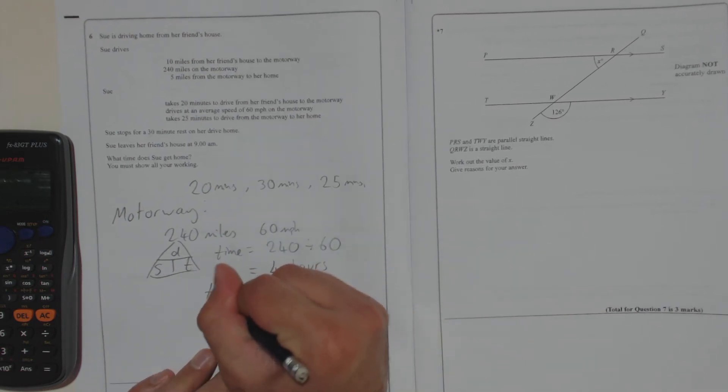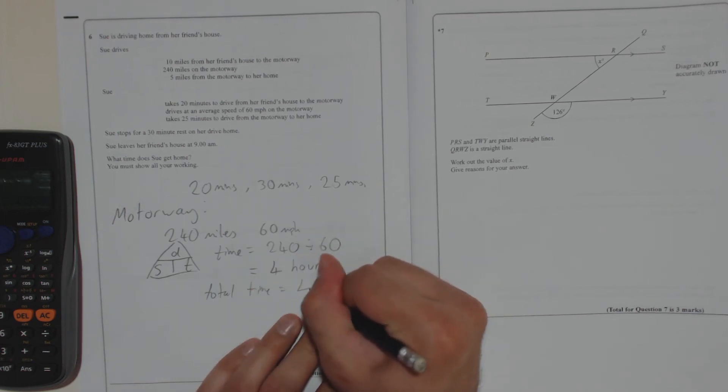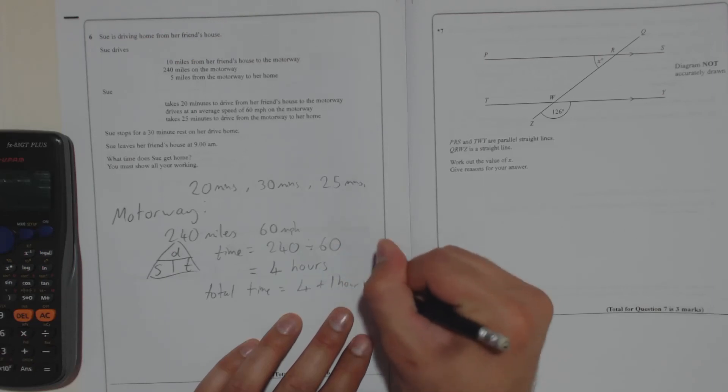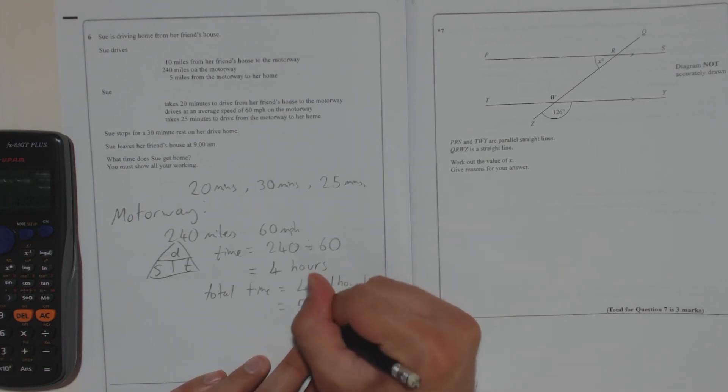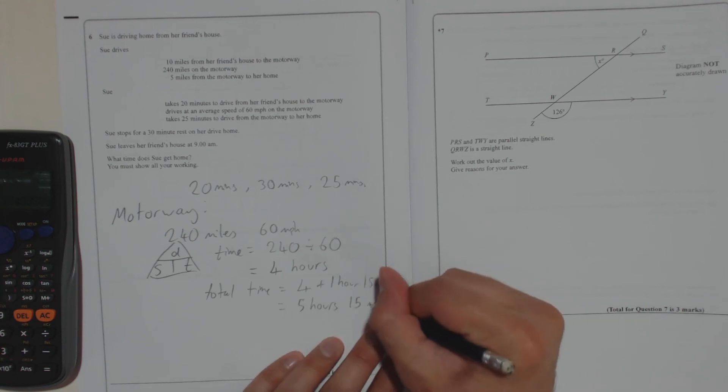So, total time equals 4 plus 1 hour 15 mins, which is 5 hours 15 mins.